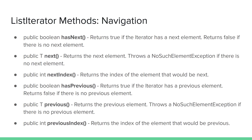hasPrevious returns true as long as there is an element in front of the iterator's current position, and previous returns the previous element and moves the iterator back to the next in-between position. Like the next method, previous will throw a NoSuchElementException if called when there is no previous element, assuming the iterator is at the beginning of the list. We also have nextIndex and previousIndex methods that tell us the current position: nextIndex tells us the index of the element that would be returned next, and previousIndex returns the index of the element that would be returned by previous.